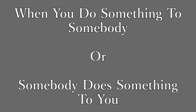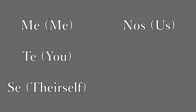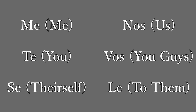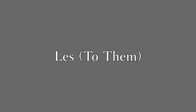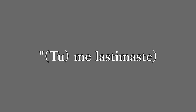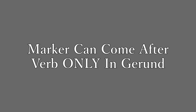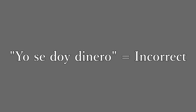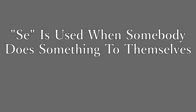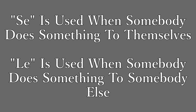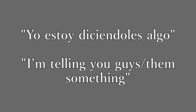Reflexive verbs are when you're doing something to somebody, or somebody does something to you. You use one of these markers: me (me), te (you), se (they/he/she/you all), nos (us), vos (you all, mainly in Spain), le (he or she, when coming from another person), and les (they and you all, when coming from another person). For example: me lastimaste — you hurt me. We could also say tú me lastimaste, but the pronoun is omitted for ease. In the gerund form you can put the marker after the verb: estás lastimándome — you are hurting me. When somebody is showering: está duchándose. If I give somebody money, I would say yo le doy dinero, not yo se doy dinero. When a third-person subject does something to themselves, the marker se is used; if anyone else does something to them, the marker le comes in.